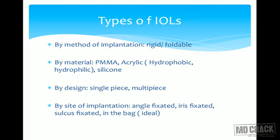Intraocular lenses can be classified by method of implantation as rigid or foldable. Foldable lenses can enter through a very small incision, whereas rigid lenses require at least a 5 mm incision. By material, they can be classified as PMMA (polymethyl methacrylate), acrylic — either hydrophobic or hydrophilic forming the foldable variety — and silicone lenses, also foldable. Hydrophobic acrylic is the preferred material with the best results in most eyes today. By design, single-piece and multi-piece are the two types.